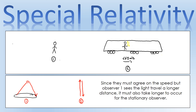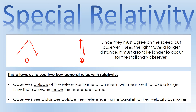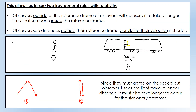Hopefully that's blown your mind a little bit, because it's pretty remarkable. This allows us to see one of the two key general rules of relativity. First: observers outside the reference frame of an event will measure it to take a longer time than someone inside the reference frame. Second: observers see distances outside their reference frame that are parallel to their velocity as shorter. Let's see both of those in action with this thought experiment.